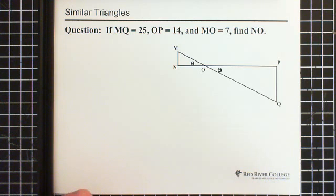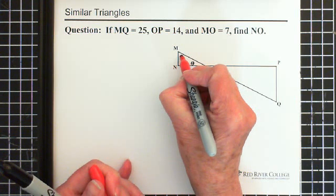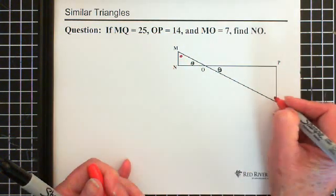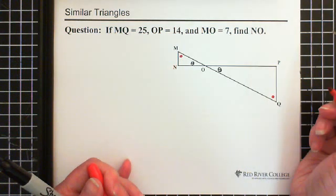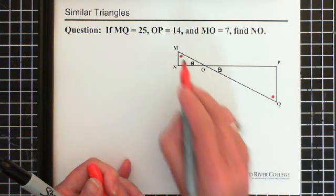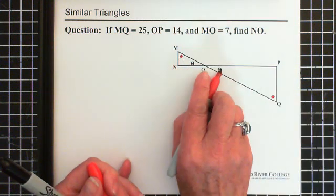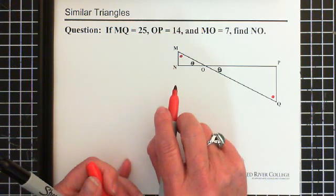And this angle here, I'm just going to make a big red dot, has to correspond or be the same size actually as this angle right here. So this angle and this angle have to be equal, just as this angle and this angle must be equal. So as a result we have similar triangles.